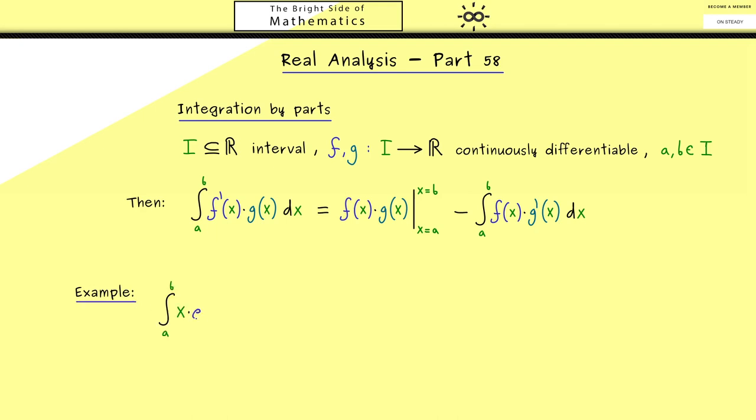The example should not be so complicated. Let's take the function x times the exponential function of x. Here you might not know the antiderivative immediately, so we could apply integration by parts. It's always worth a try. There could be different possibilities to assign the functions f and g. Here it will be helpful that the exponential function is our function f prime. Therefore, x is our function g. We do this because we know the antiderivative of the exponential function and the derivative of x is very simple, which means the integral in the end will be simpler.